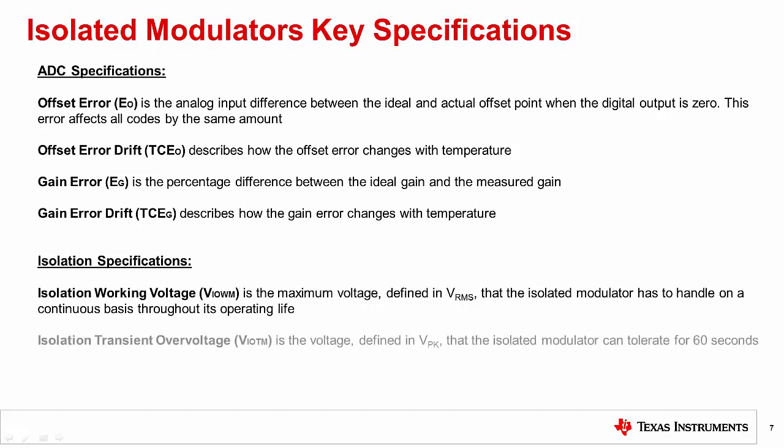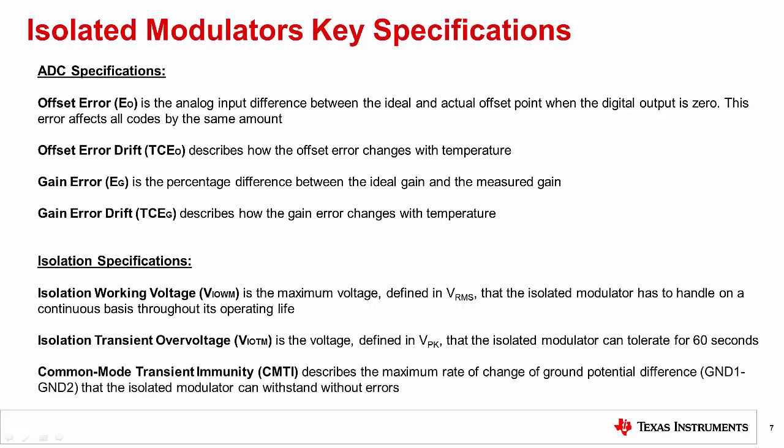Next, isolation transient over voltage is the voltage defined in volts peak that the isolated modulator can tolerate for 60 seconds. Lastly, we have to define the common mode transient immunity, or CMTI, which describes the maximum rate of change of ground potential difference that the isolated modulator can withstand without errors.